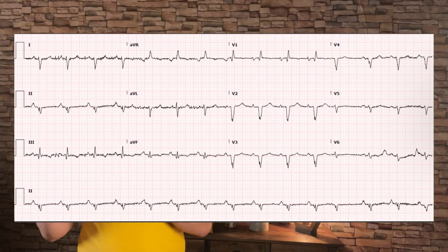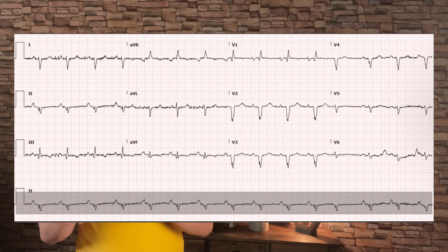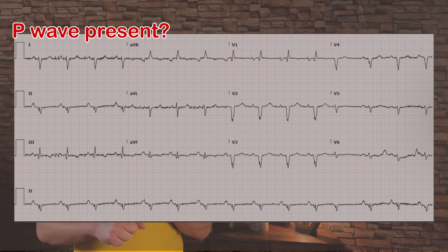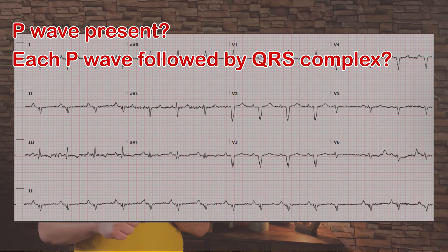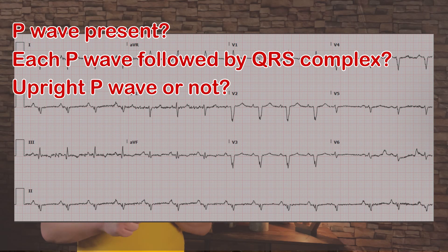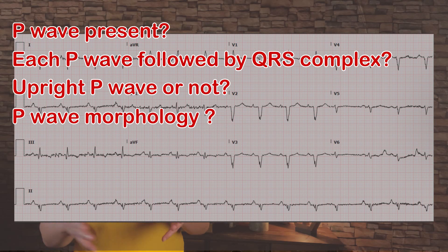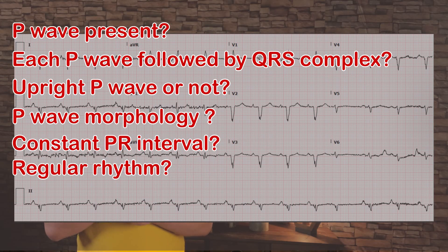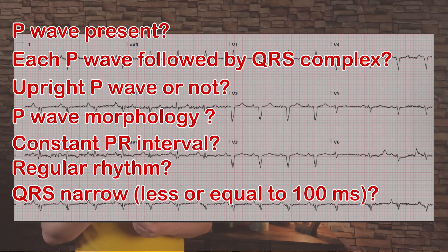In practical terms, every time we grab an EKG, I immediately look at the lead 2 strip. I look for the P wave: is it present, is each P wave followed by a QRS complex, is it upright or negative, does it have the same shape and morphology throughout? Is there a constant PR interval? Is the rhythm regular — is the RR interval regular?